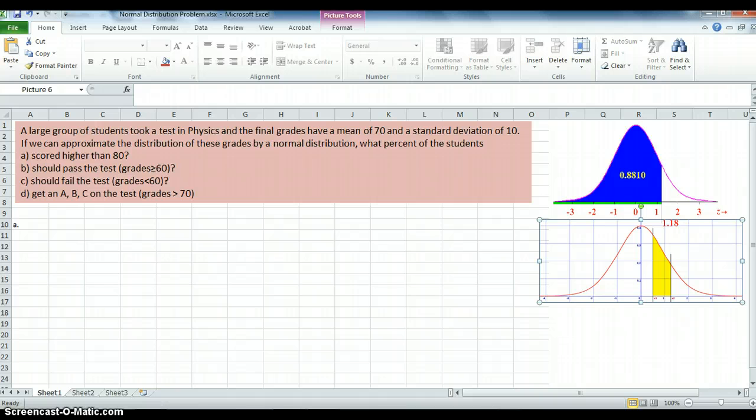A large group of students took a test in physics and the final grades have a mean of 70 and a standard deviation of 10. If we can approximate the distribution of these grades by a normal distribution, what percent of the students A) scored higher than 80, B) should pass the test greater than 60, C) should fail the test less than 60, and D) get an A, B, or C on the test which is greater than 70.